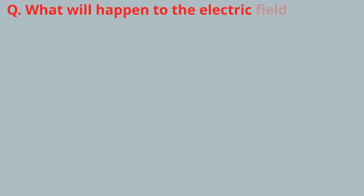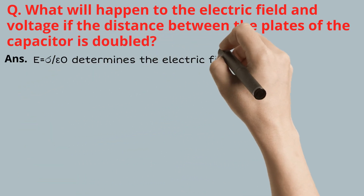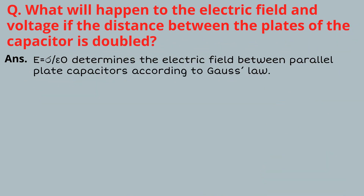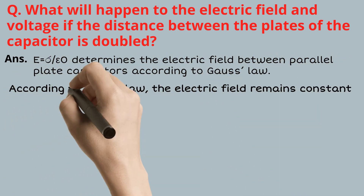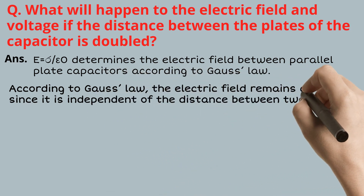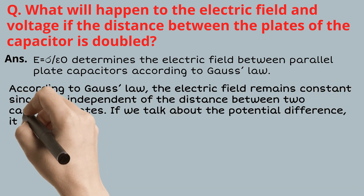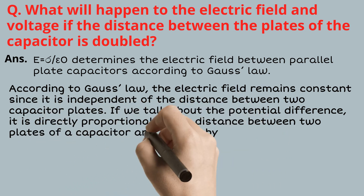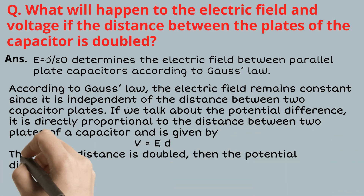FAQ: What will happen to the electric field and voltage if the distance between the plates of the capacitor is doubled? E equal to sigma upon epsilon zero determines the electric field between parallel plates according to Gauss's law. The electric field remains constant since it is independent of the distance between the two capacitor plates. However, the potential difference is directly proportional to the distance between the plates and is given by V equal to E dot d. Thus, if the distance is doubled, the potential difference also increases.